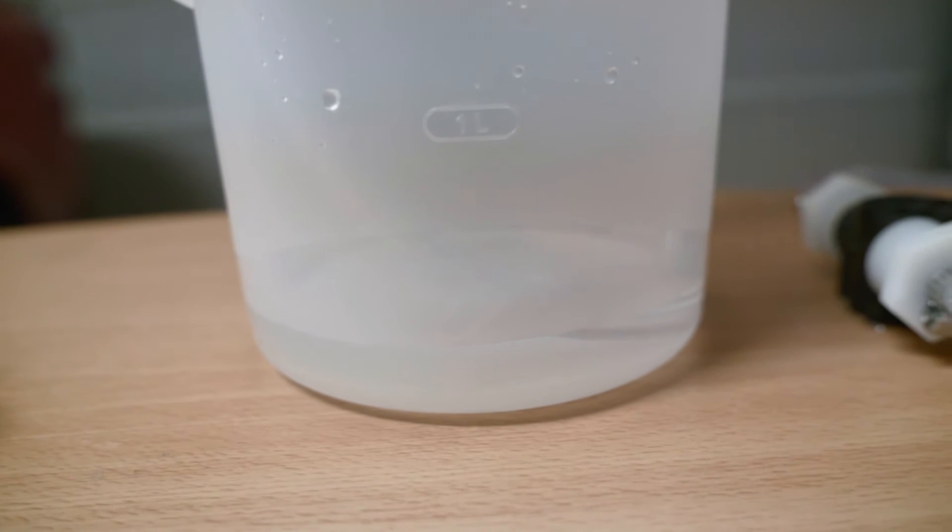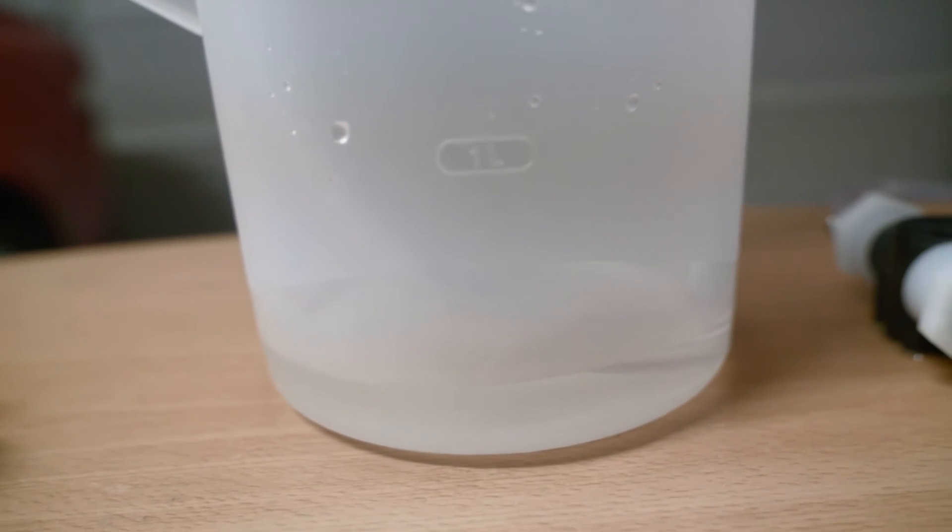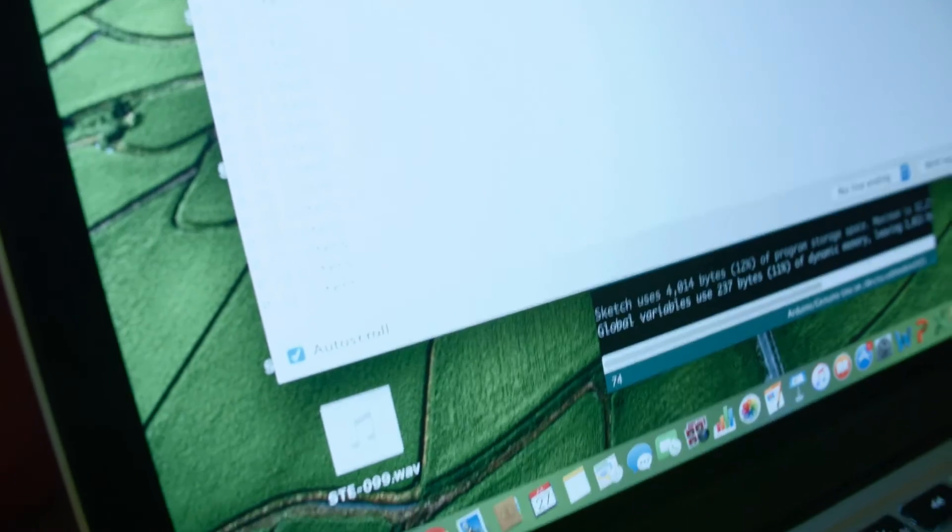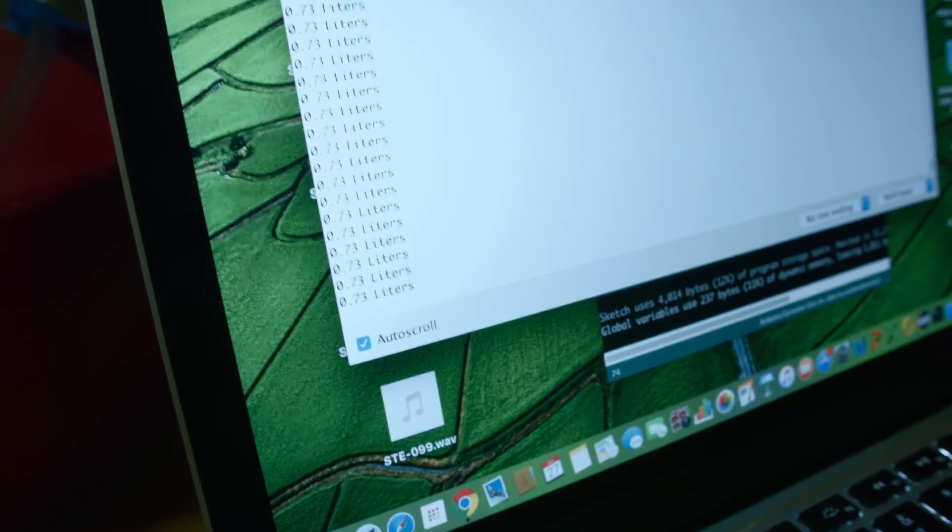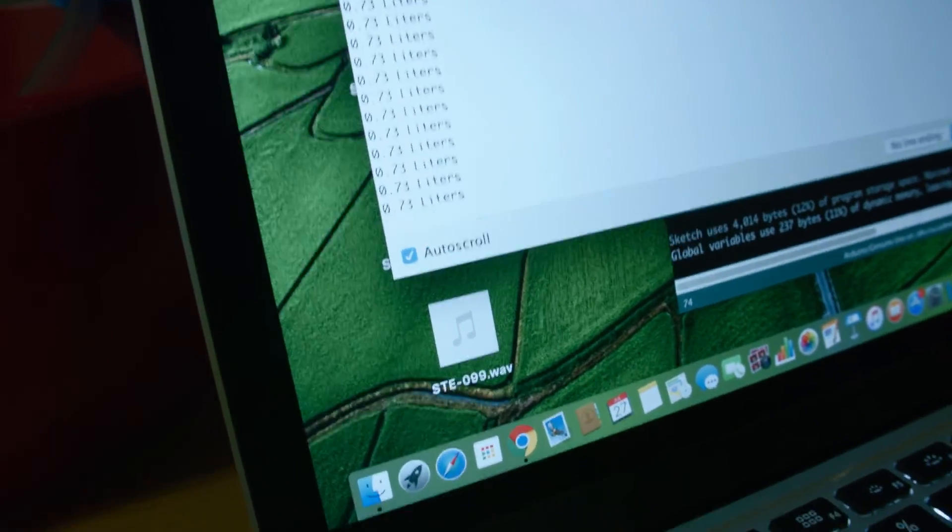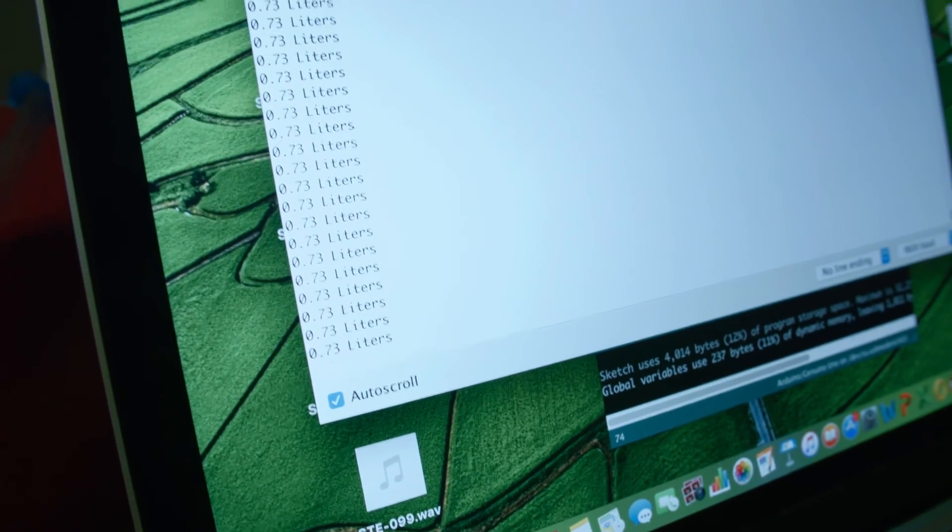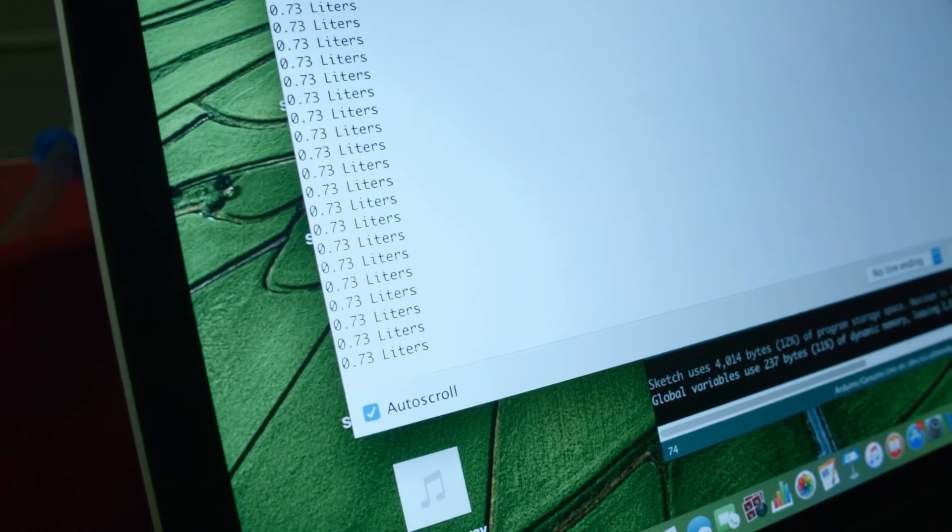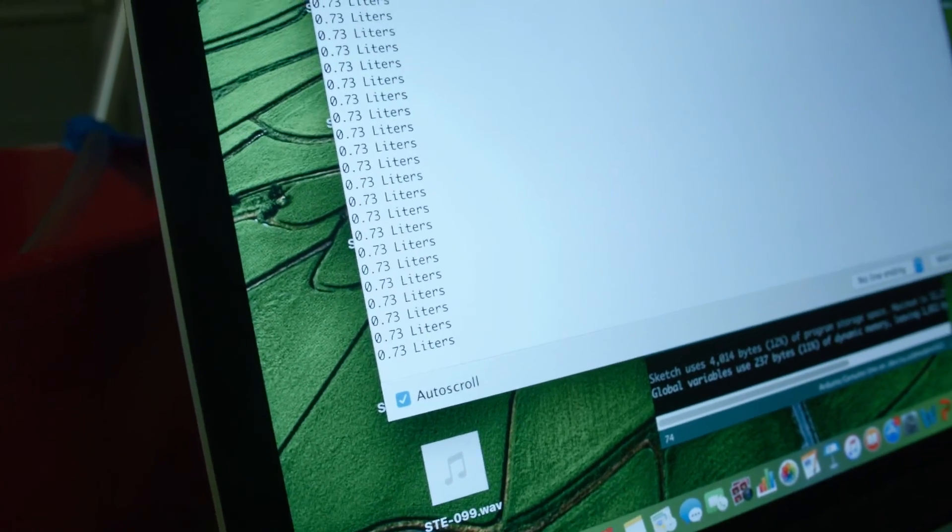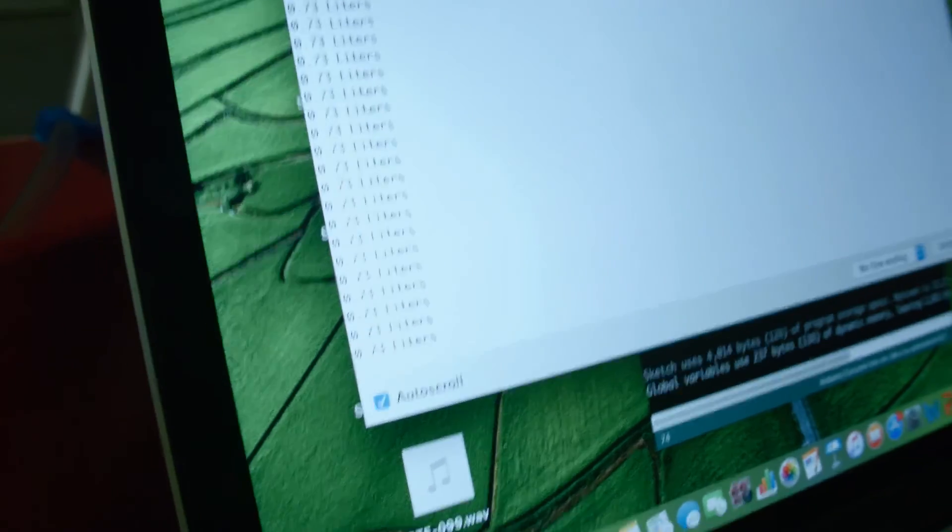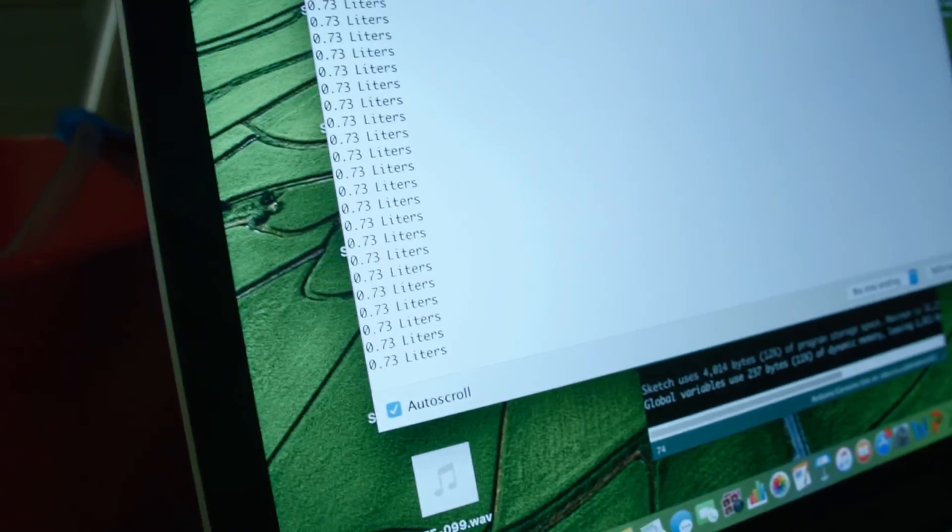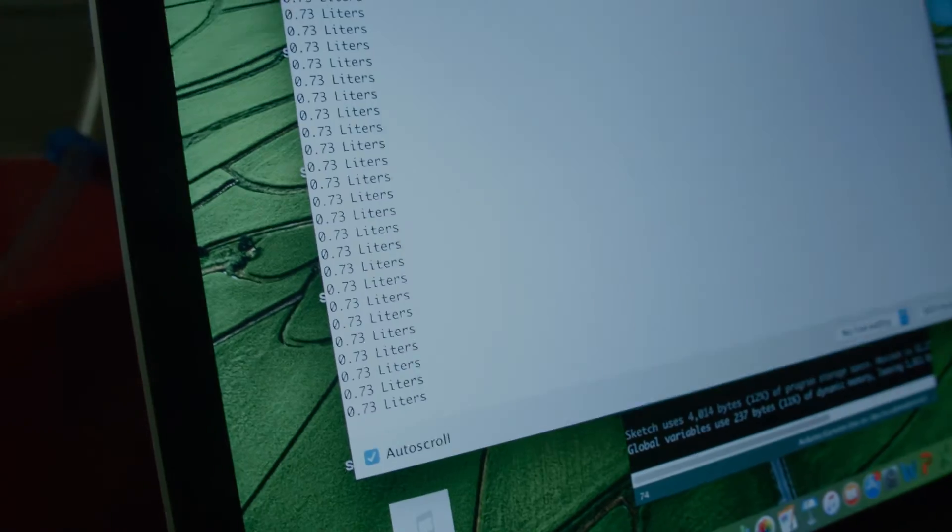It looks like we output about three-fourths of a liter of water. Over here on my monitor, there's about 0.73 liters that came out. That's about right. I think this will be accurate enough for what we're trying to do. This will be our setup. Now we just have to make sure that we can read values from all five of those flow meters.